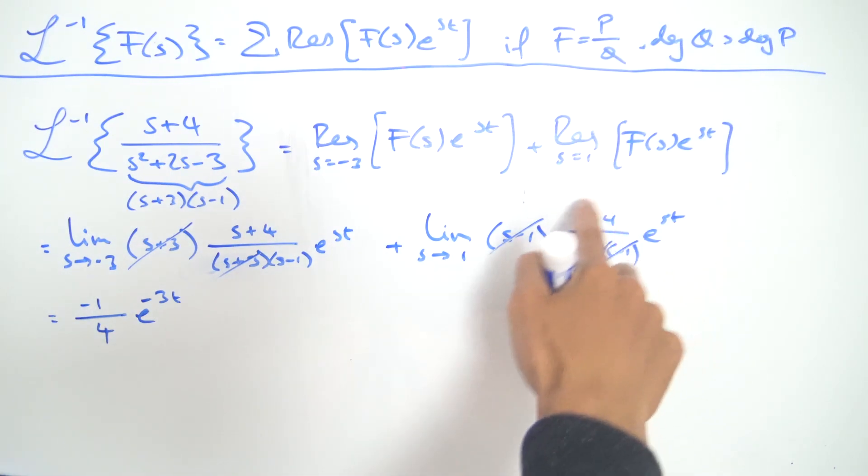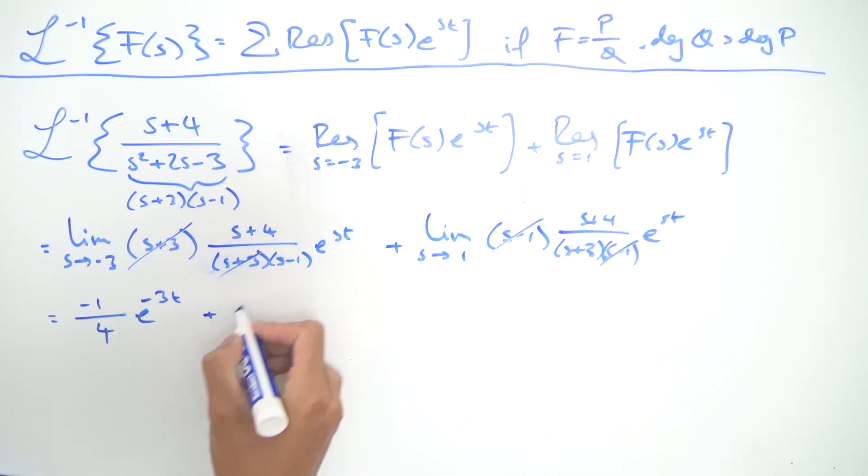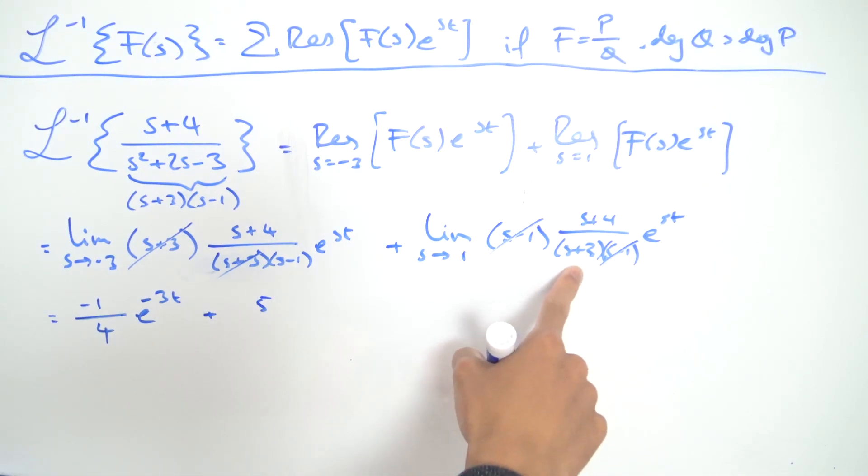And on the second term over here as s approaches one, well on the numerator we're just going to get a five. As s approaches one on the denominator we're going to get one plus three which is a four, and then as the s approaches one over here we're just going to get e^t.